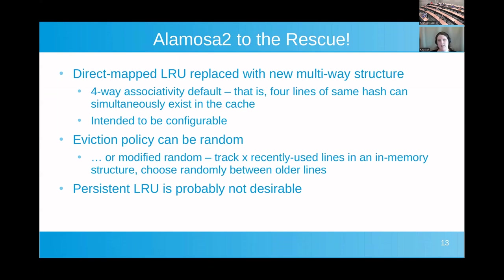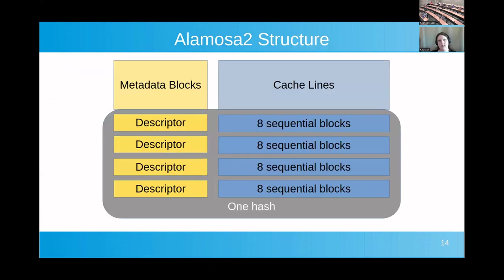There will assuredly be changes to all of this before the upstream conversation. With the new structure, one hash corresponds to a set of four different lines which can have four different addresses. The previous issue of overly aggressive eviction goes away — if you have a hot line, it will never be kicked out. If the bottom one is hot, you pick one of the other three to eject, and one of those goes away to make room for the new line you're bringing in.